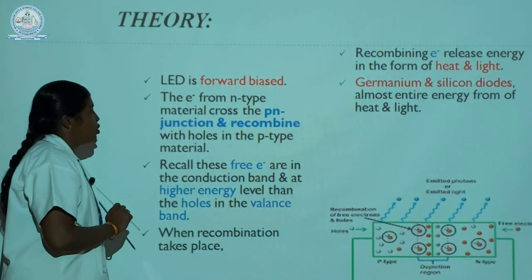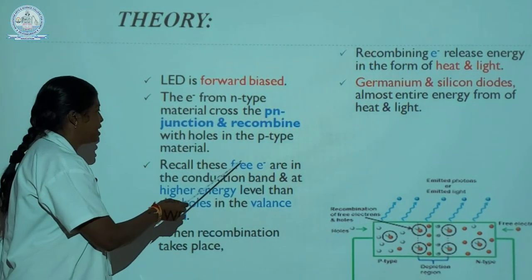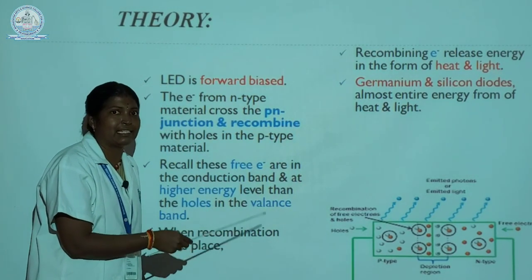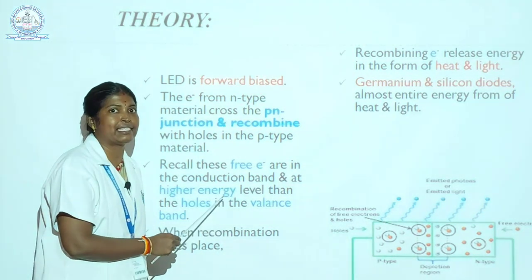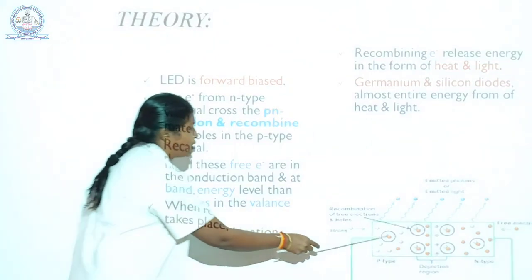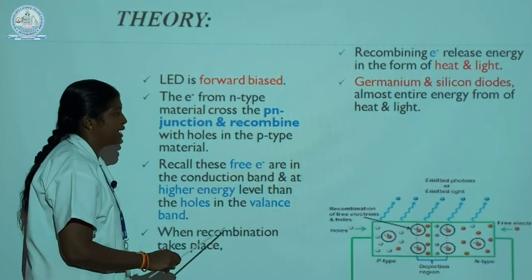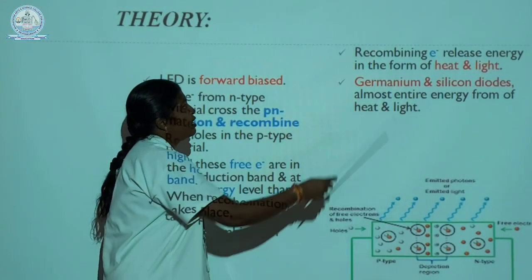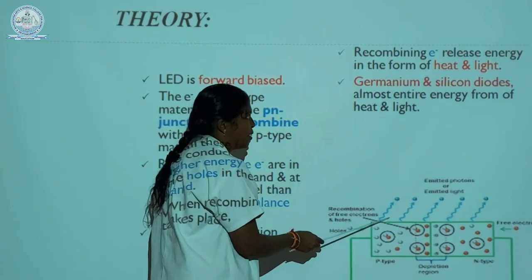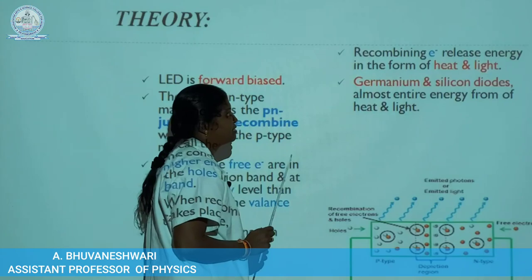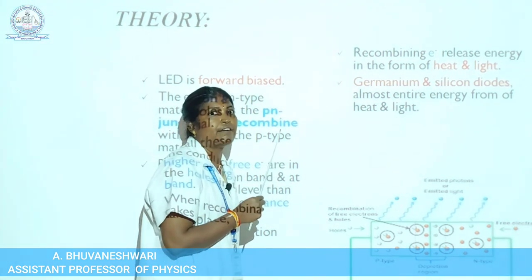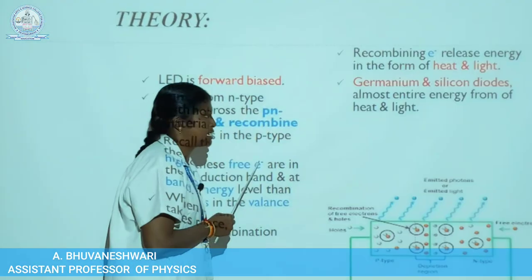The free electrons are in the conduction band at a higher energy level than the holes in the valence band. When electrons and holes recombine, the electrons release some energy in the form of heat and light. Germanium and silicon diodes release most of their energy in the form of heat.